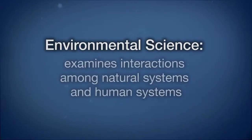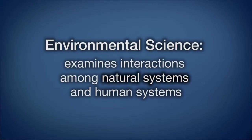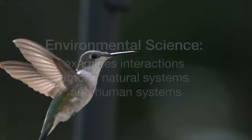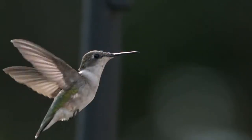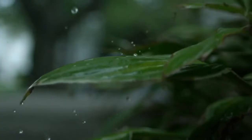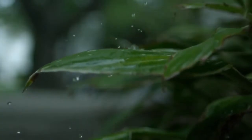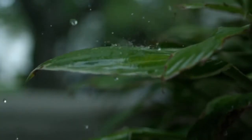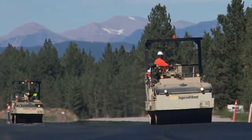Environmental science is the interdisciplinary academic field of study that examines interactions among natural systems and human systems. Environmental science draws on physics, chemistry, and biology. It combines the natural environment and considers environmental problems caused by humans.